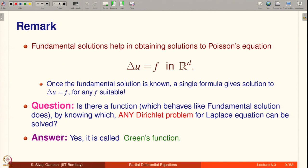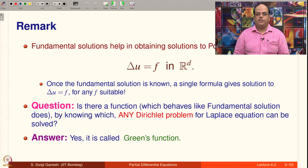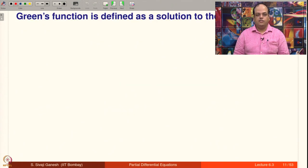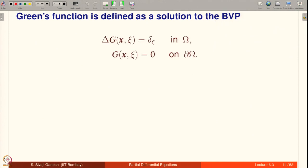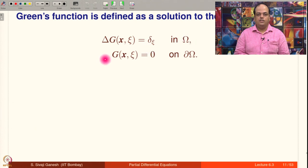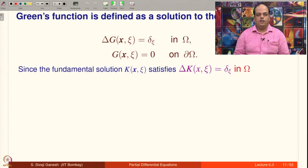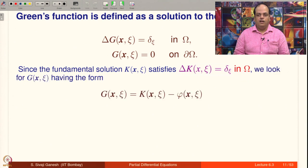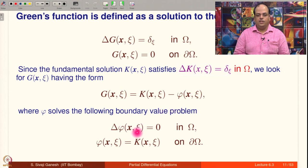Understand the difference between Green's function and fundamental solution — these two names are often blurred in the literature, so pay specific attention to the difference. Green's function is defined as a solution to the boundary value problem: Δ_x g = δ_ξ in Ω, g(ξ) = 0 on the boundary of Ω. Since the fundamental solution k already satisfies Δk = δ_ξ in Ω, we look for g having the form g = k − φ, where φ solves Δφ = 0 in Ω and φ(ξ) = k(ξ) on the boundary of Ω.